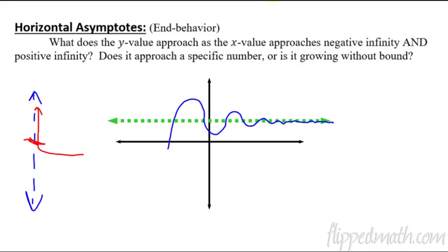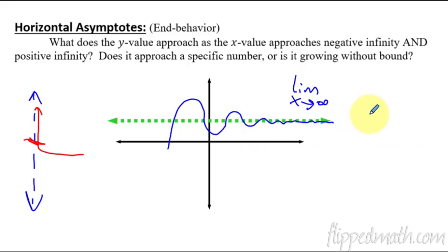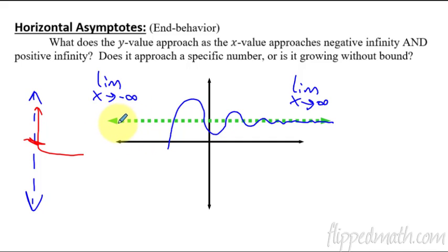So what that means is that we're going to be looking at limits as x approaches infinity. As x goes off to infinity, that is describing a horizontal asymptote. Or if we said the limit as x approaches negative infinity, that would be talking about the left side, if there is a horizontal asymptote and a y value that it approaches. All right, so let's jump into it for today.